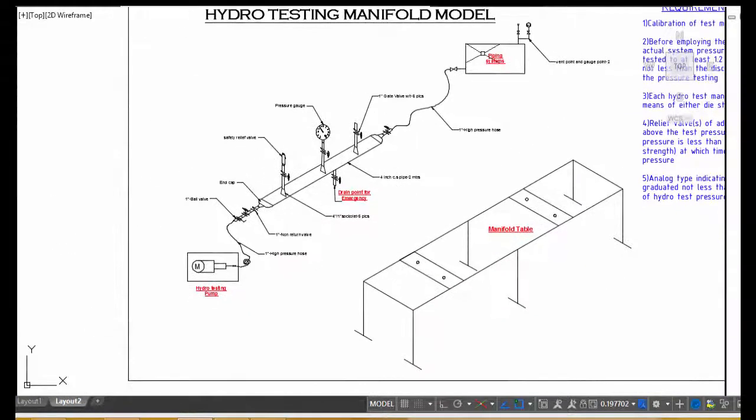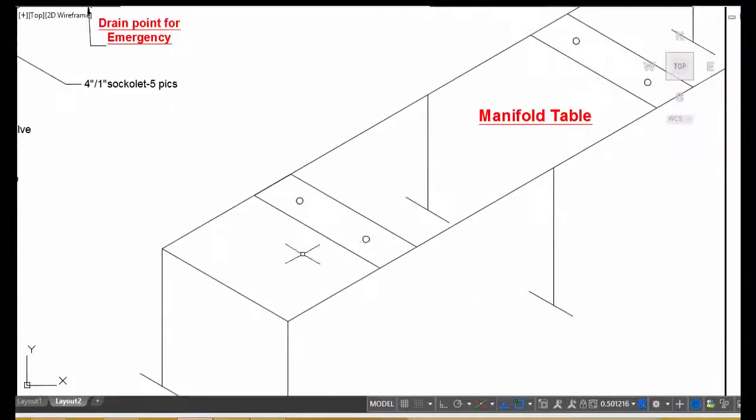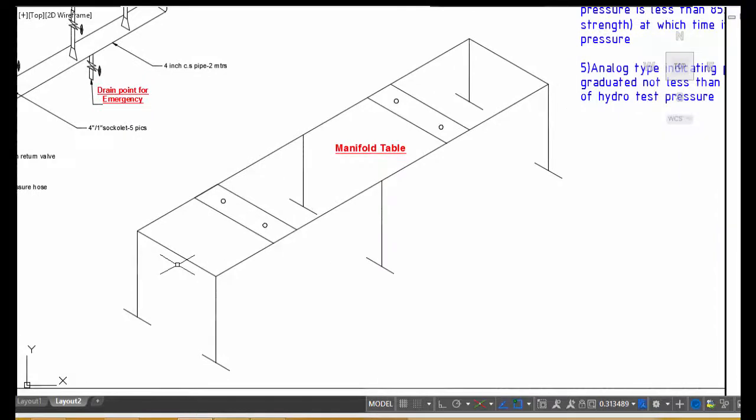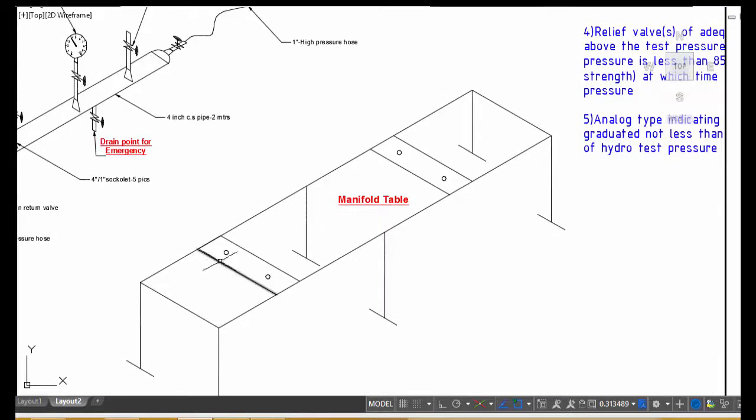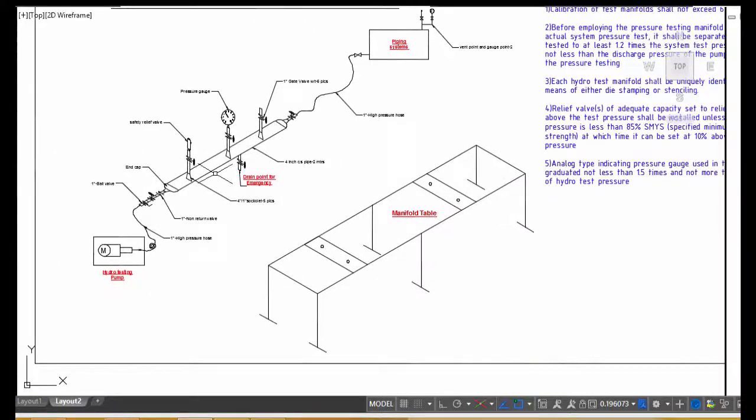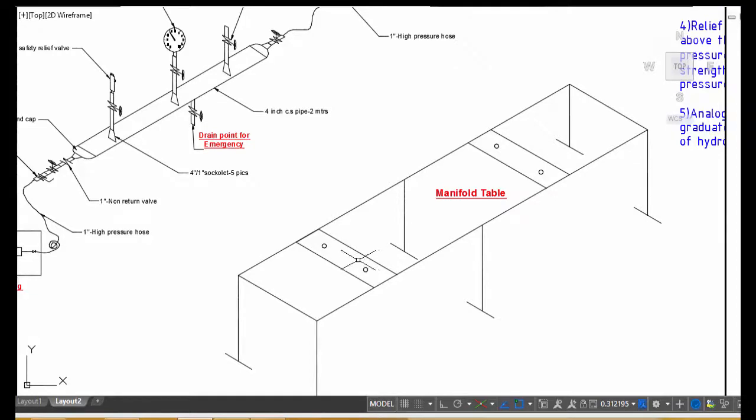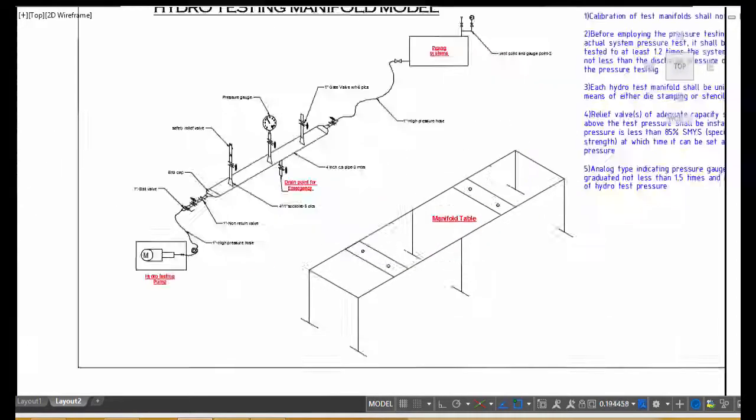This manifold we can install with a table like this. You can make a table by 100 angle or 80 angle like this, put two U-clamps and you can tighten it, so you can take this manifold any place.